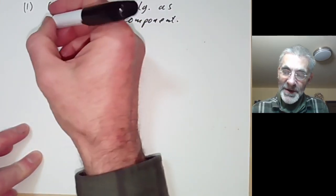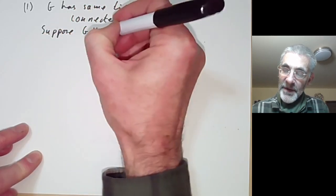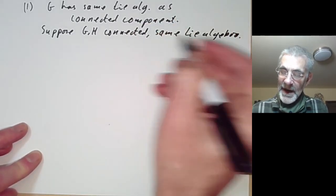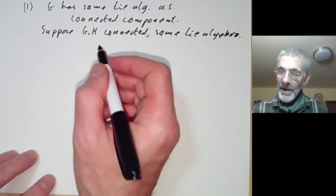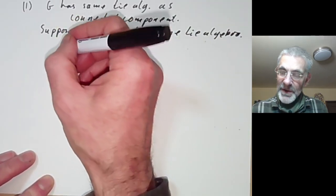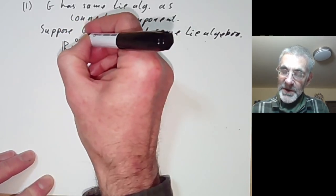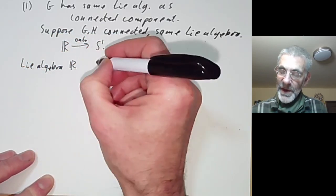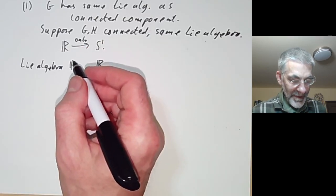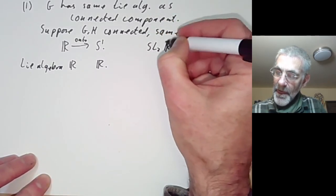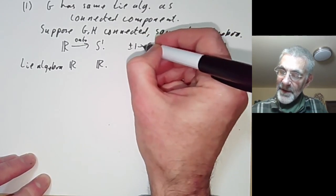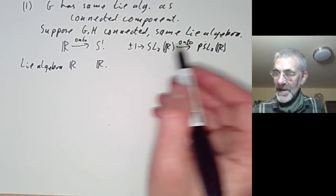But we should ask the question for connected groups. Suppose G and H are connected and have the same Lie algebra. Well, are they the same? No, because we can take the reals mapping onto the circle group S1 — both have Lie algebras isomorphic to the reals. Another example might be the group SL2 where the kernel consists of the elements plus or minus one. Again, these two groups have the same Lie algebra but they're not isomorphic; for instance, one has a non-trivial centre and the other doesn't.